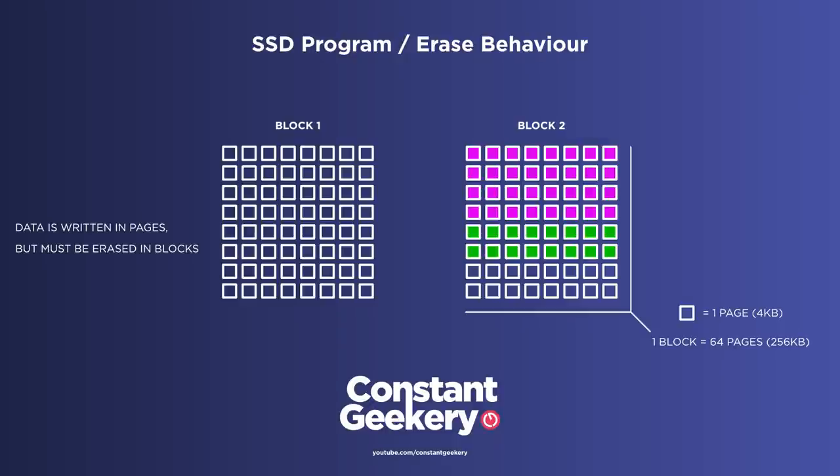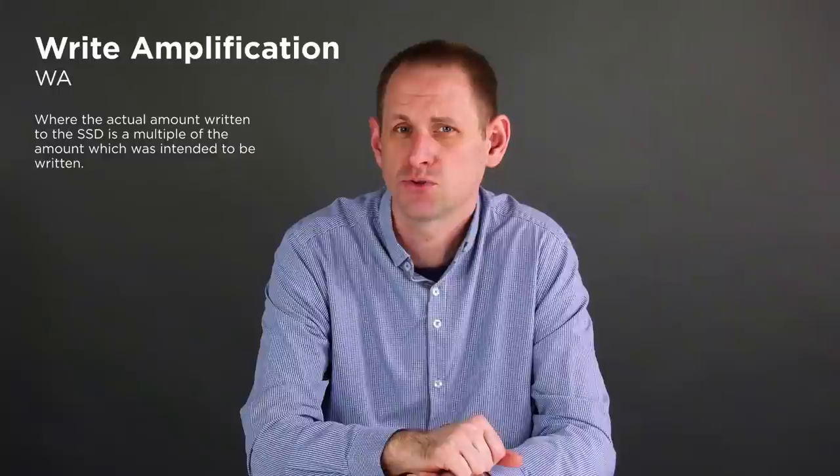And this last step is something called garbage collection, which goes on in the background. And all of this shuffling of data means that when you write data to your SSD, the actual amount of data that gets written to the NAND cells can be more than you expected. You might save a one megabyte file, but the amount of data written could be higher than that, maybe two megabytes. And this is referred to as write amplification or WA.